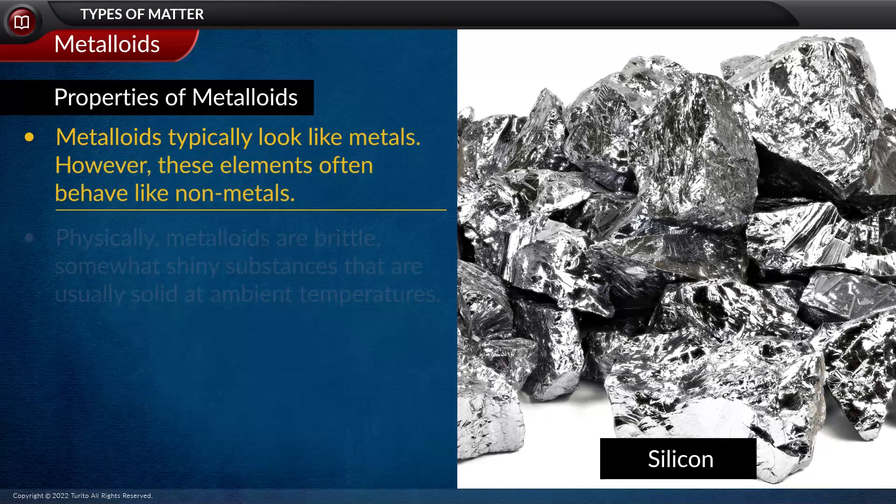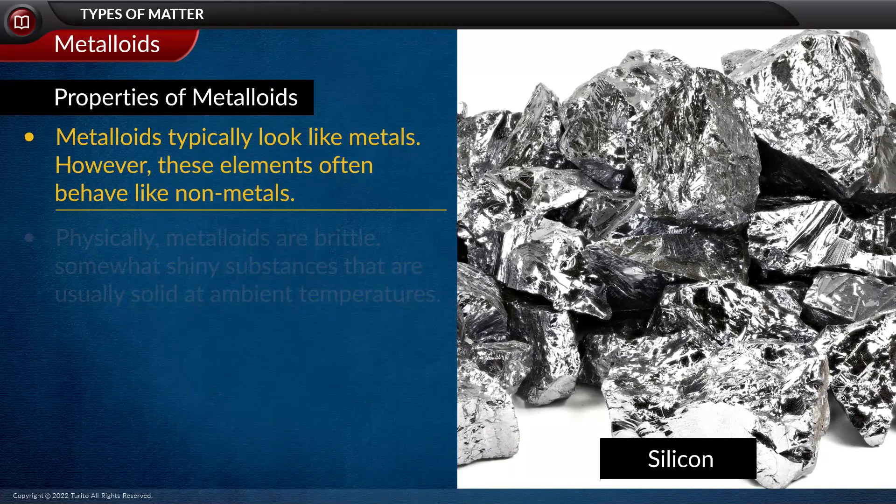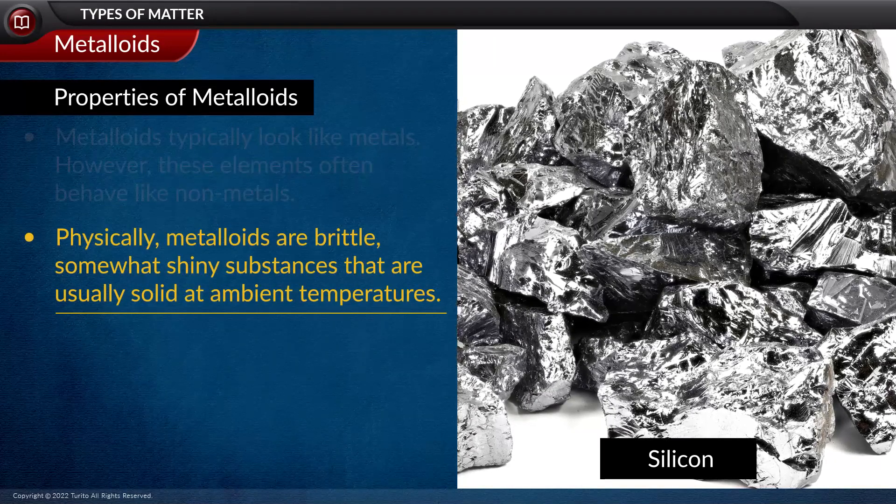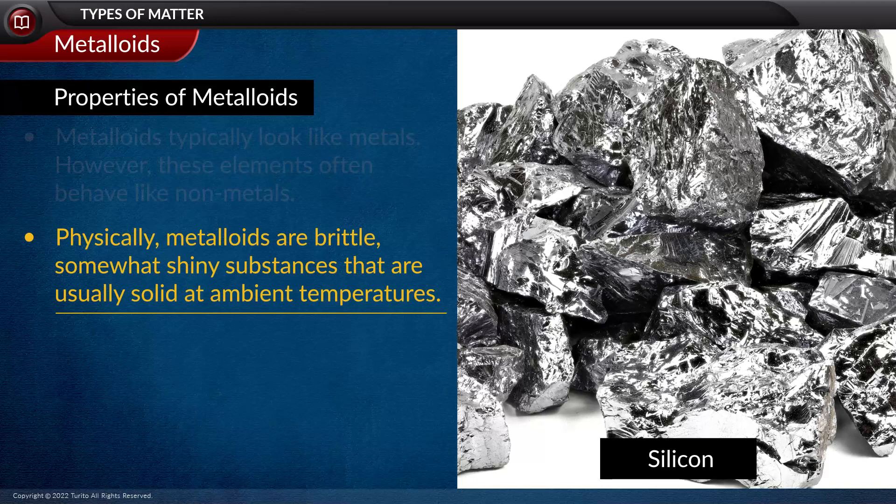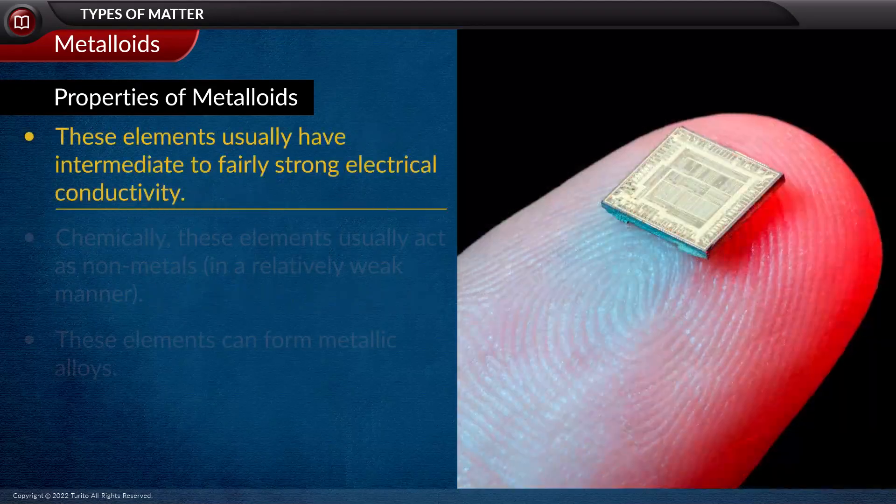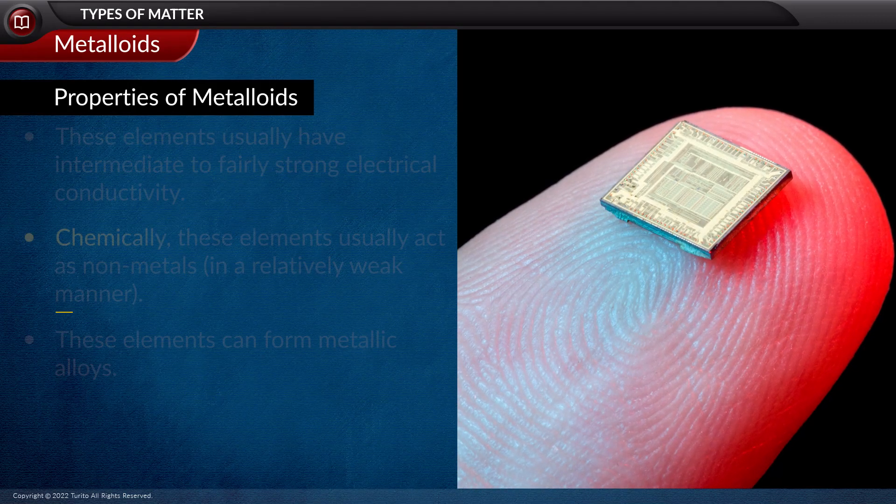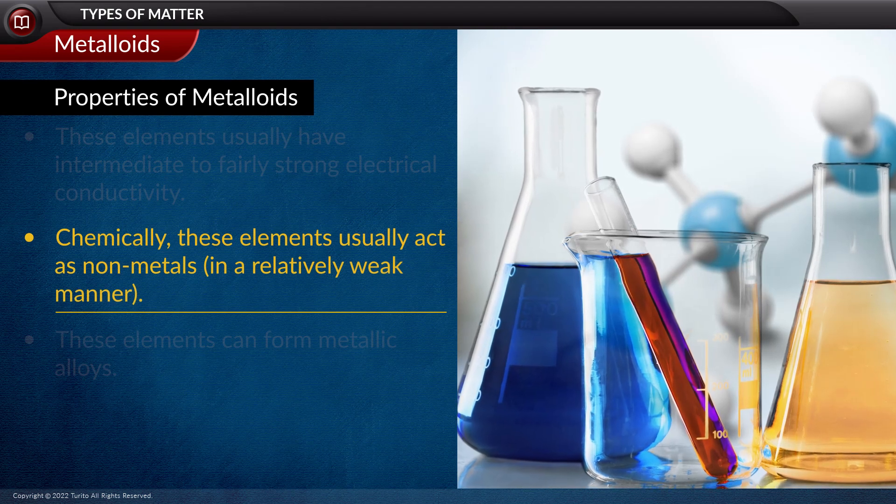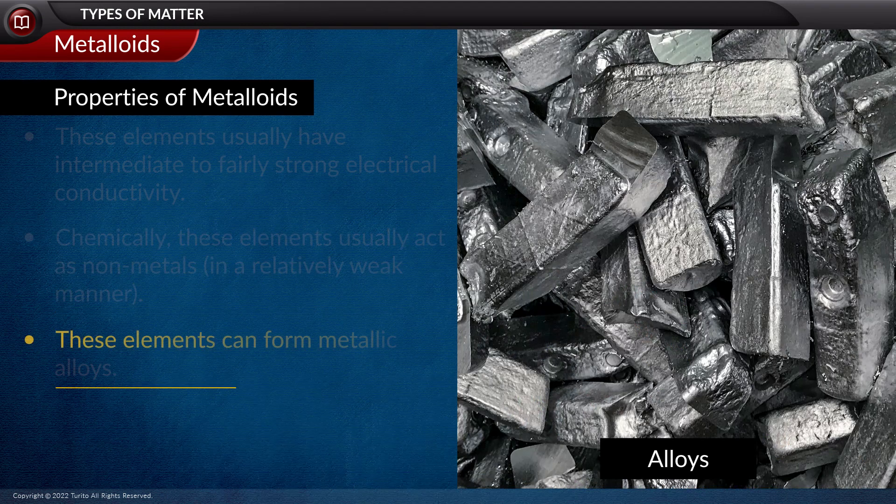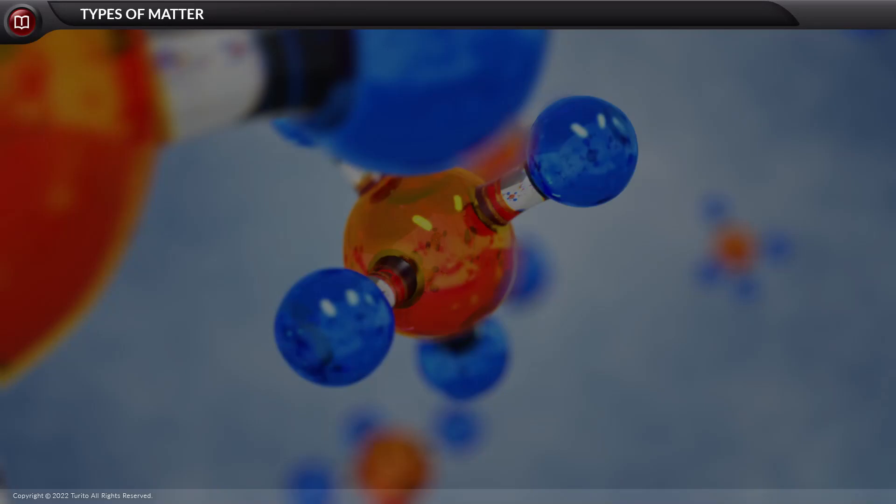Lastly, metalloids typically look like metals. However, these elements often behave like non-metals. Physically, metalloids are brittle, somewhat shiny substances that are usually solid at ambient temperatures. These elements usually have intermediate to fairly strong electrical conductivity. Chemically, these elements usually act as non-metals in a relatively weak manner. These elements can form metallic alloys.